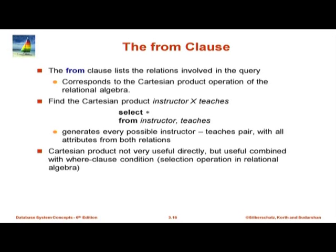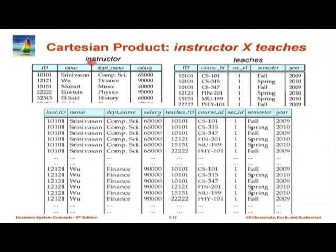Now let us come back to the FROM clause. So far we had only a single relation in the FROM clause. Now let us look at a query which has two relations in the FROM clause. When I list SELECT * FROM instructor, teaches — that is the same as saying find the Cartesian product of instructor and teaches, and then apply the WHERE clause condition. Here there is no WHERE clause condition, so this final result is simply the Cartesian product of instructor and teaches. As in relational algebra, Cartesian product is not very useful by itself — it is very useful once you have a WHERE clause condition.